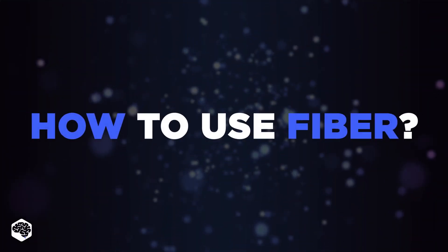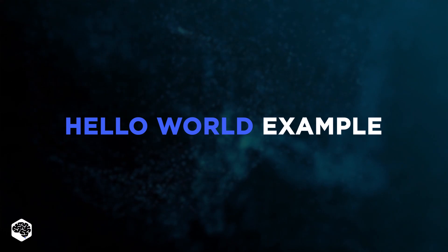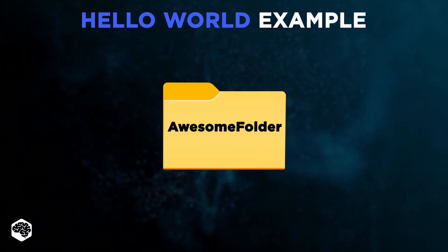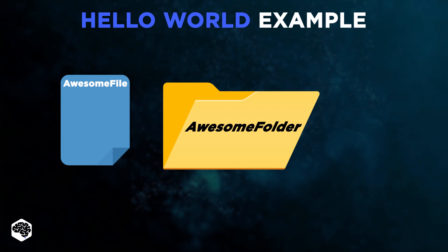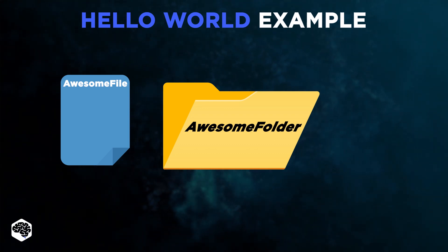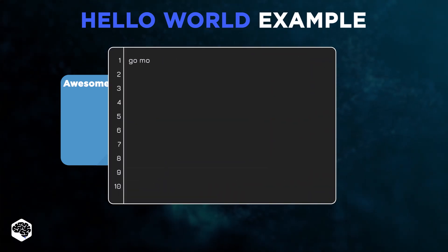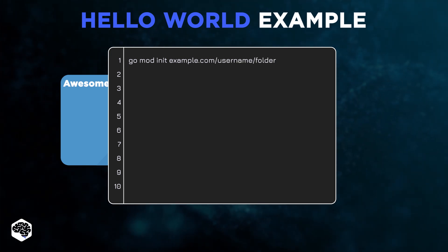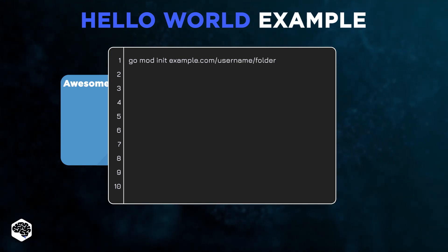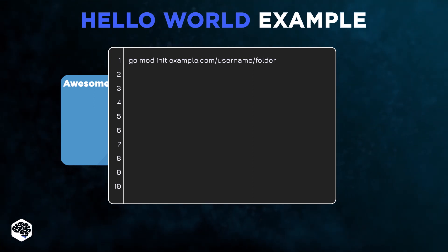So how to use Fiber? Let's look at a simple Hello World example. To get started, open a folder to save your file using your favorite text editor. To install any dependency in this folder, initialize the directory using GoMod. Run this command in your terminal: go mod init example.com/username/folder.